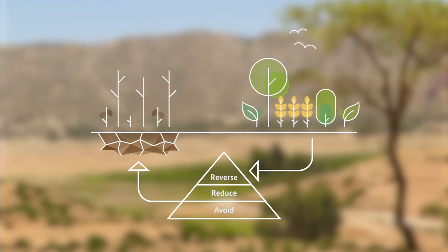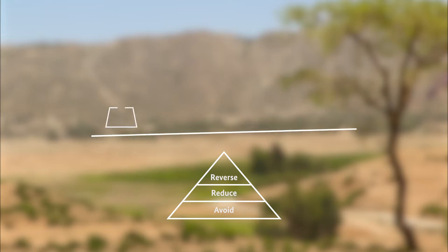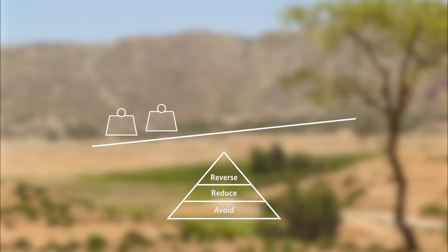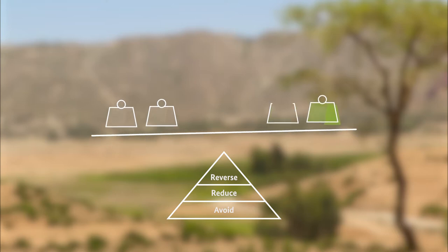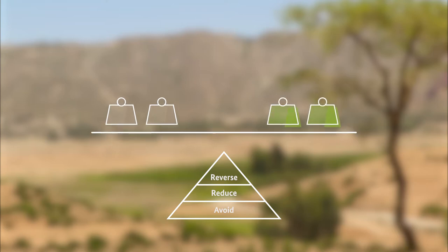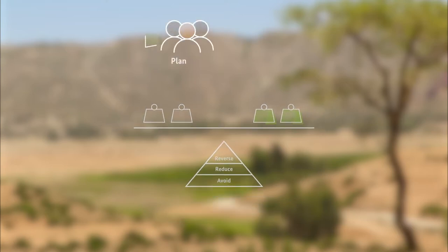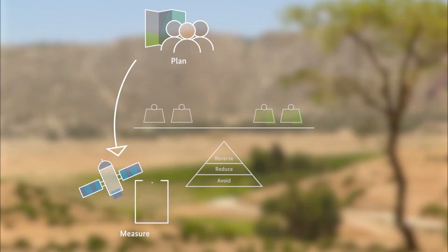Ideally, the resulting neutrality brings land use into balance, so that in net terms any new degradation will be counterbalanced with the reversal of past degradation. Because land degradation neutrality is an ongoing steering mechanism that requires the right mix of actions, a continuous planning, monitoring and adjustment process is needed.